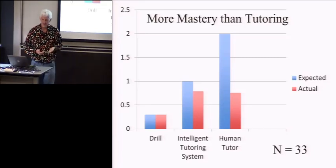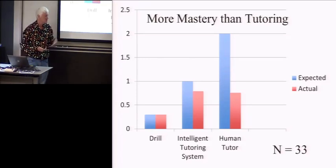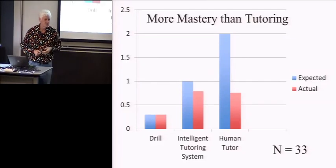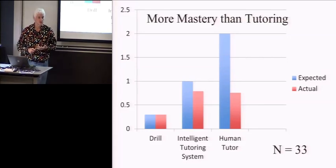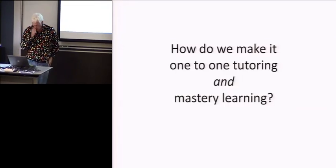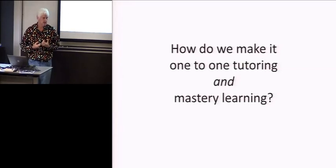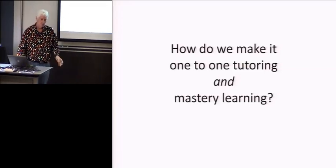So should decades worth of research be predicated on what 33 students happen to do? Maybe a couple of them had a bad day or something and it could throw everything off. But now we have the opportunity to do experiments with N equals 33,000 or maybe 3 million. We are suited to gather much more data much more quickly. So maybe we can advance this field a little bit more. Okay, so how do we do that? How do we make it so that we have these two key ingredients of one-on-one tutoring and mastery learning, but at an affordable scale through automation?